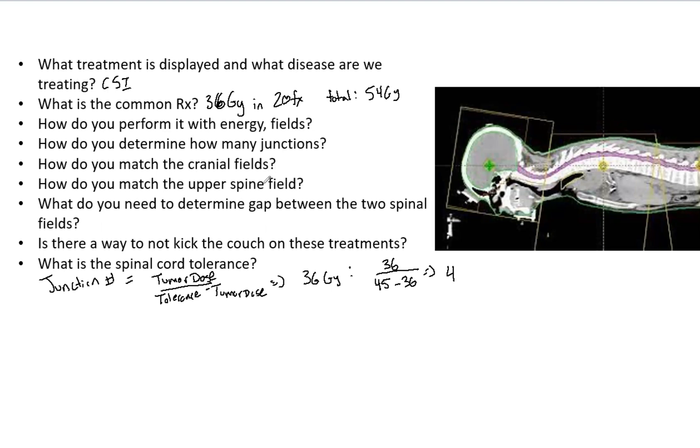How do you match the cranial fields? You want to match the divergence of the upper spine field and cranial fields themselves. You want this field to match the spine field. Because of divergence, it's going to come in an angle, so you want to make this cranial field match that. What you can do is half beam block that field so you don't have divergence.